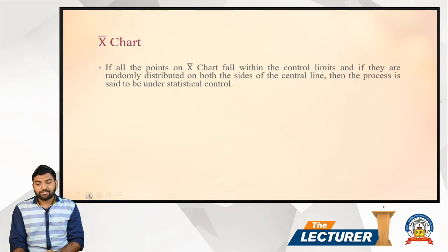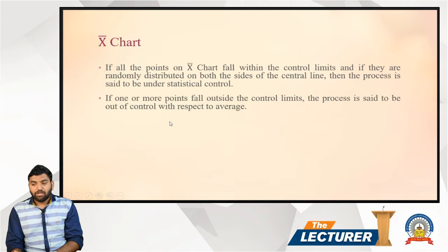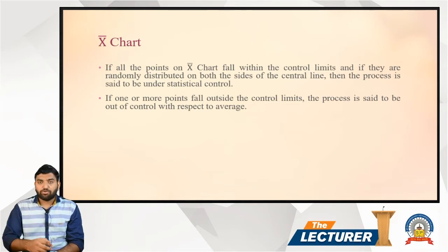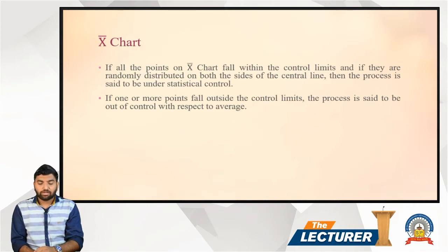This is a simple example that is out of control. If one or more points fall outside the control line, the process is said to be out of control with respect to average. If points fall within the control limits, it is said to be a controlled process; if not, then it is said to be an out-of-control process.